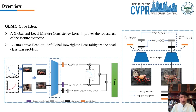In our work, there are two-fold core ideas. First, we use a global and local mixture consistency loss to improve the robustness of feature extractors. Especially, we generate two augmented batches by global mix-up and local cut-mix from the same batch, and then use cosine similarity to minimize the differences. Second, we use Accumulative Head-Tail Soft Label Reweighted Loss to mitigate the head class bias problem. We use Empirical Class Frequencies to reweight the mixed label of the head-tail class, and then balance the conventional loss and the rebalanced loss with coefficients accumulated by each epoch.